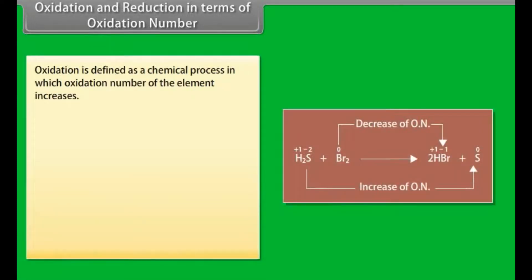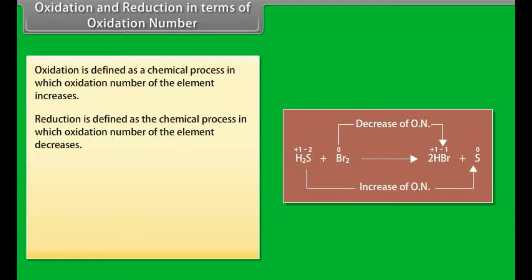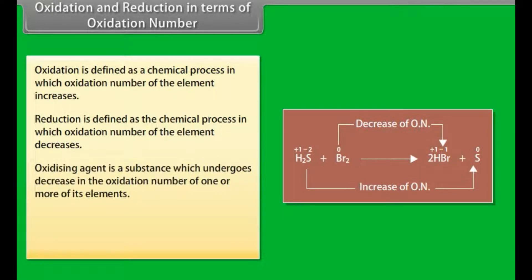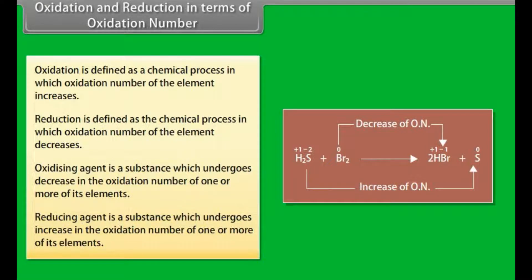Oxidation is defined as a chemical process in which the oxidation number of the element increases. Reduction is defined as a chemical process in which the oxidation number of the element decreases. Consider the reaction between hydrogen sulfide and bromine to give hydrogen bromide and sulfur. The oxidation number of bromine decreases from 0 to −1, so it is reduced. The oxidation number of S increases from −2 to 0, so H₂S is oxidized. An oxidizing agent undergoes a decrease in oxidation number; a reducing agent undergoes an increase in oxidation number. Here, H₂S is the reducing agent while Br₂ is the oxidizing agent.